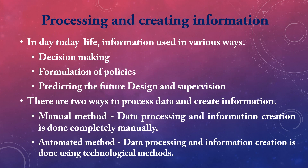There are two ways to process data and create information. The first one is the manual method, and the second one is automated methods. Manual method means data processing and information creation is done completely by hand. Automated methods means data processing and information creation is done using different kinds of technological methods.